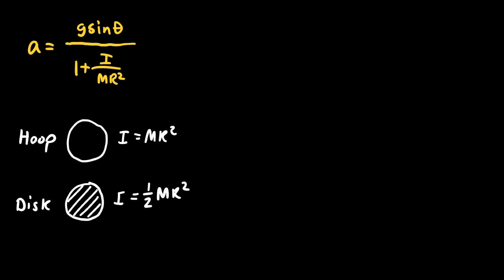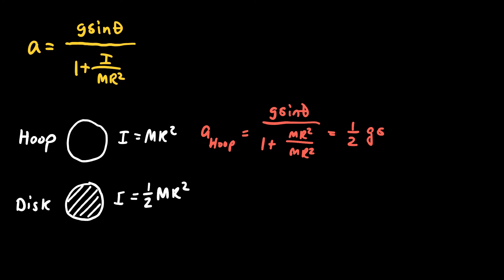For the hoop, the acceleration is g sine theta divided by (1 plus MR squared over MR squared). The MR squared terms cancel, giving 1 plus 1 equals 2 in the denominator, so the hoop's acceleration is one-half g sine theta. For the disc, the acceleration is g sine theta divided by (1 plus one-half MR squared over MR squared). The MR squareds cancel, leaving 1 plus one-half equals three-halves in the denominator, giving a disc acceleration of two-thirds g sine theta.